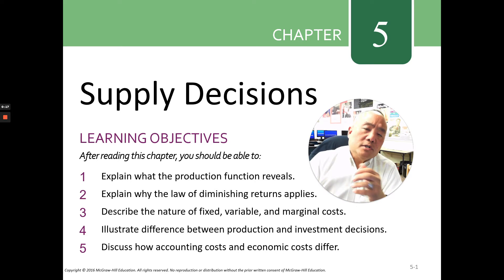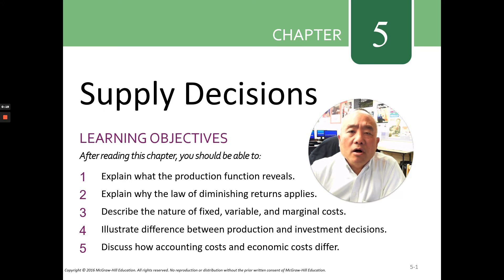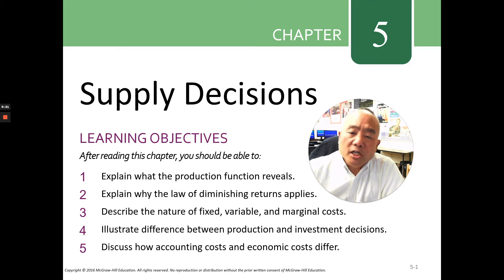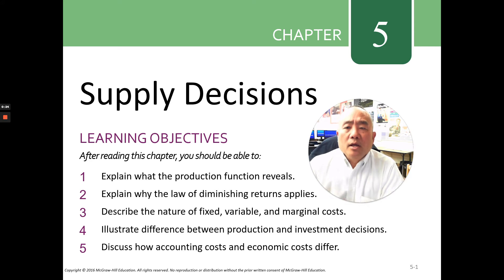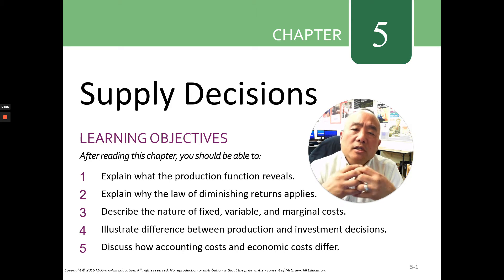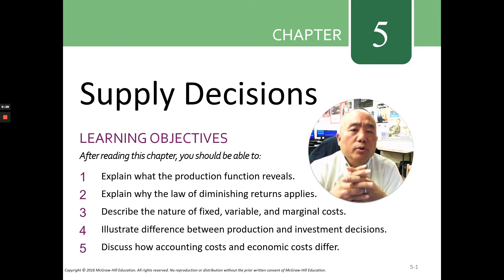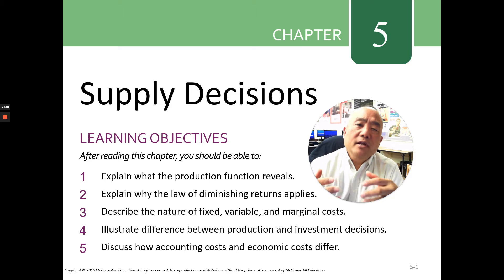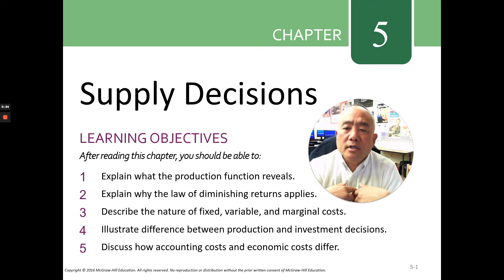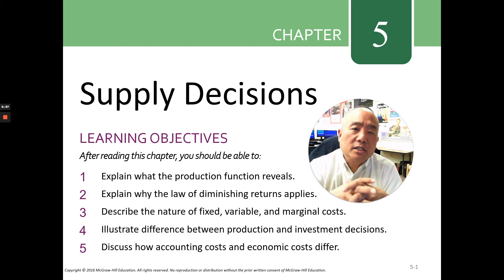The first learning objective is something called the production function. The production function will show how much output you can produce given a fixed amount of resources. That's your production function.